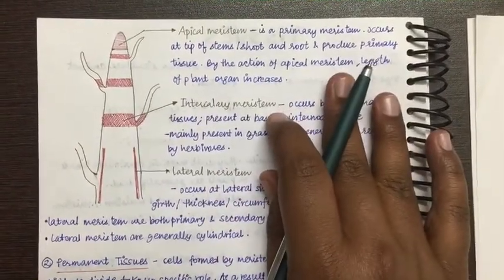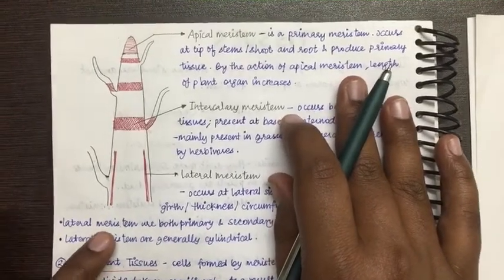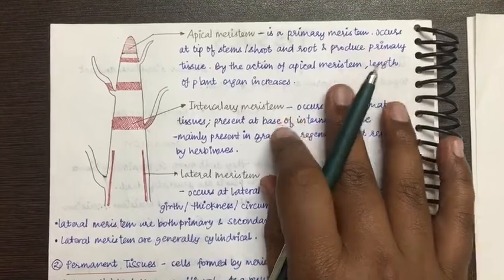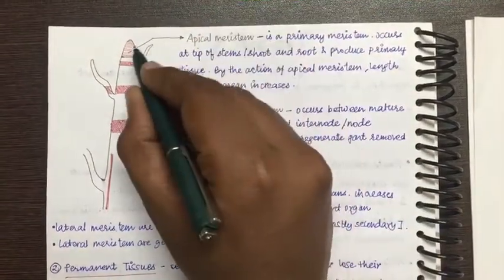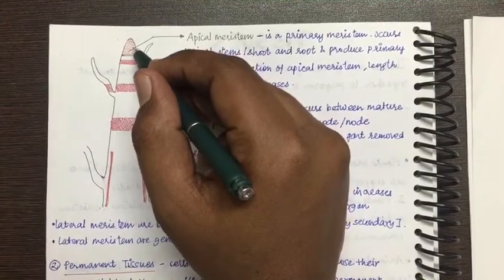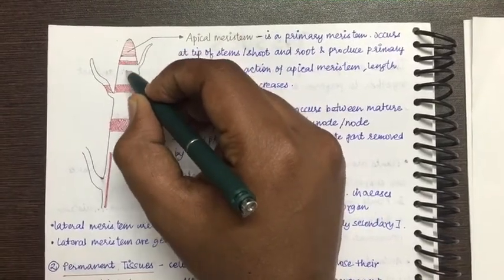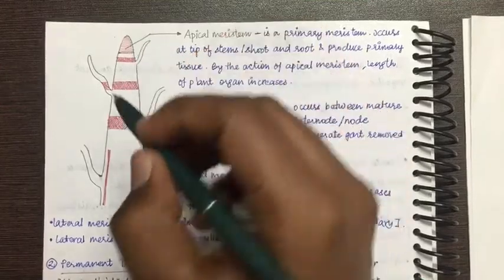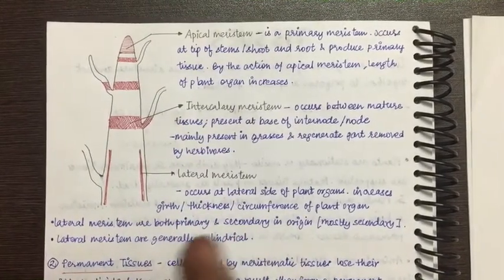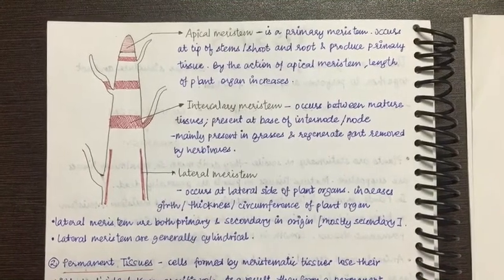In this lecture we will study deeply about apical meristem, intercalary meristem, and lateral meristem, and then we will move on to permanent tissues. As you can see in the diagram, it is a representative diagram of a plant to help better our understanding. In this diagram, the topmost red-colored cell represents the apical meristem — apical means apex, meaning the top, so the position at the top is called apical meristem. The middle portion is called intercalary meristem, and the lateral side is called lateral meristem.